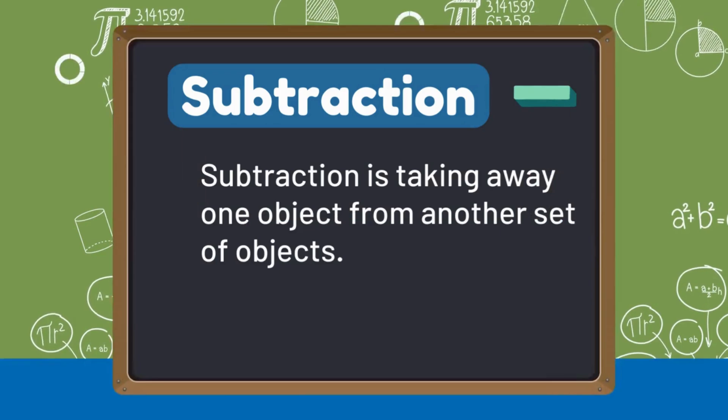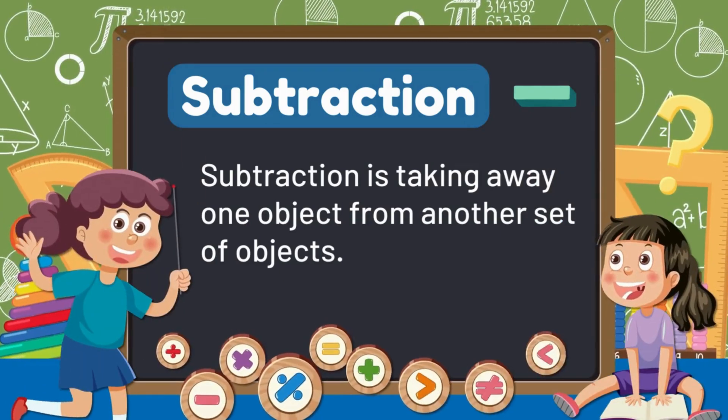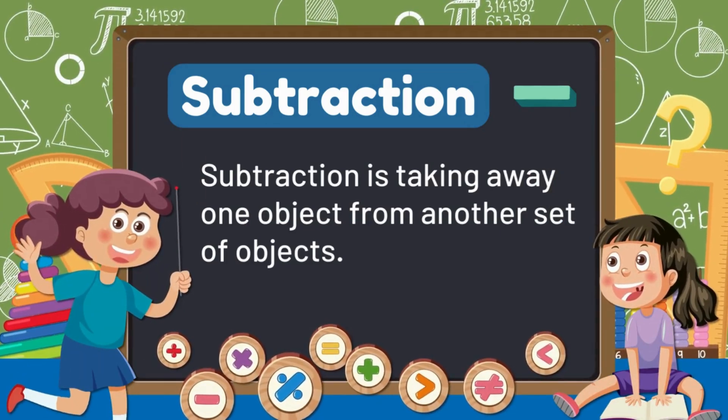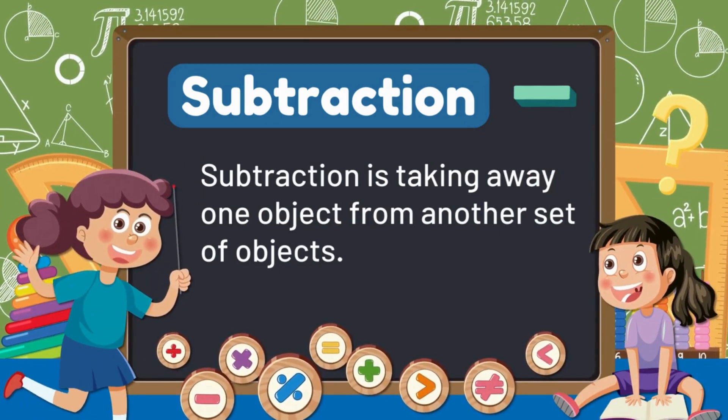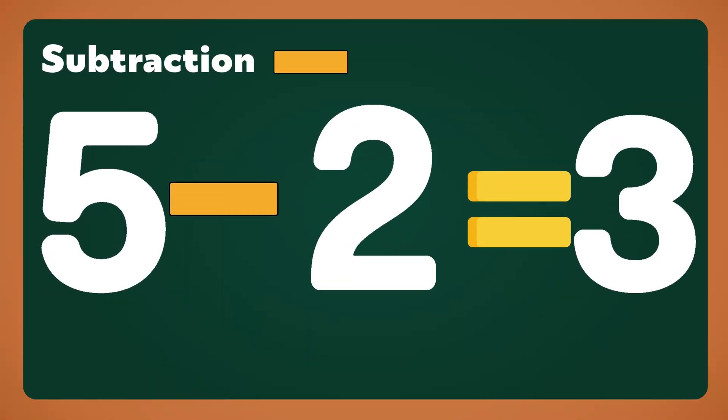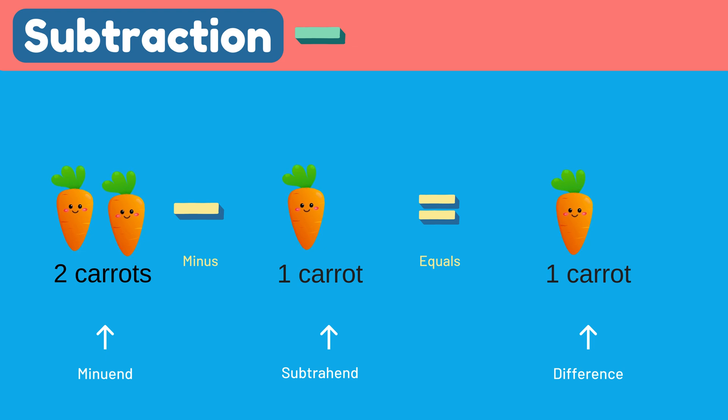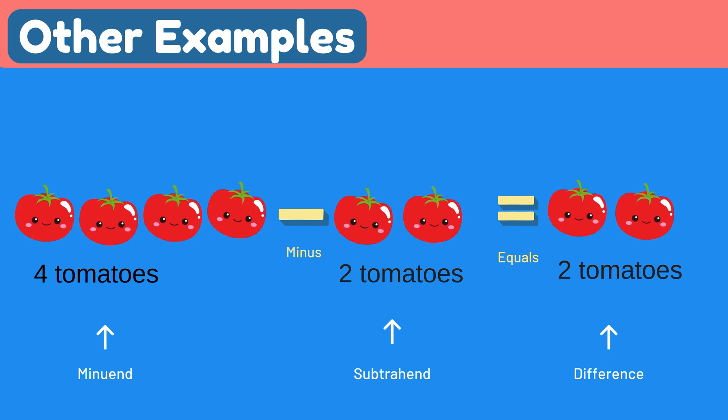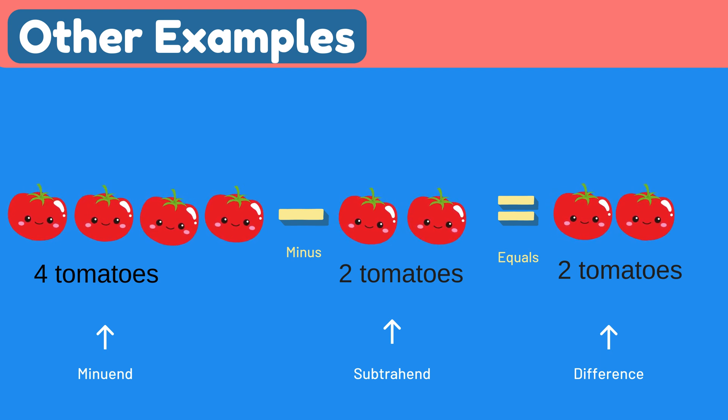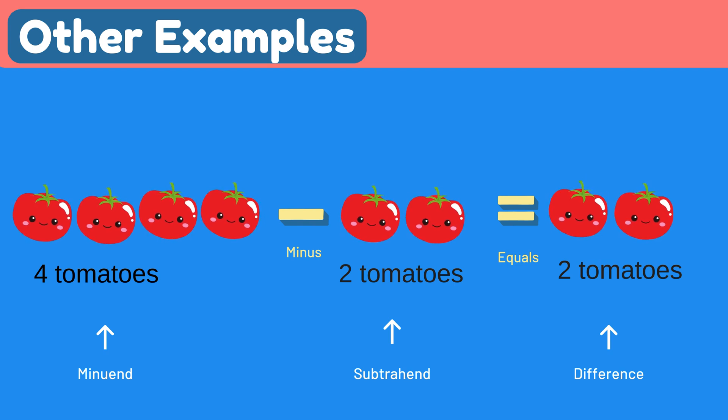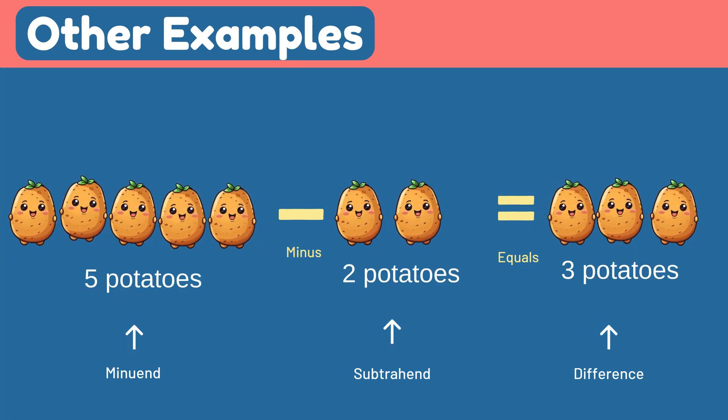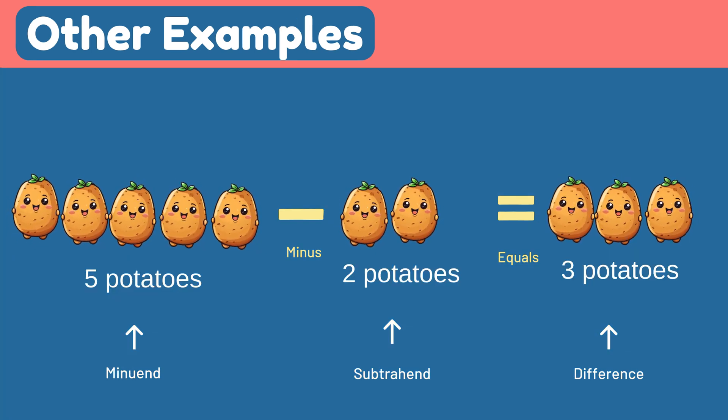Subtraction is taking away one object from another set of objects. Take it away, things get smaller every day. Five minus two equals three. Now just three are here today. Taking two carrots minus one carrot equals one carrot. Some are gone, but there's still more. Taking four tomatoes minus two tomatoes equals two tomatoes. We take away but we're not poor. Taking five potatoes minus two potatoes equals three potatoes. Now we have just three, not more.